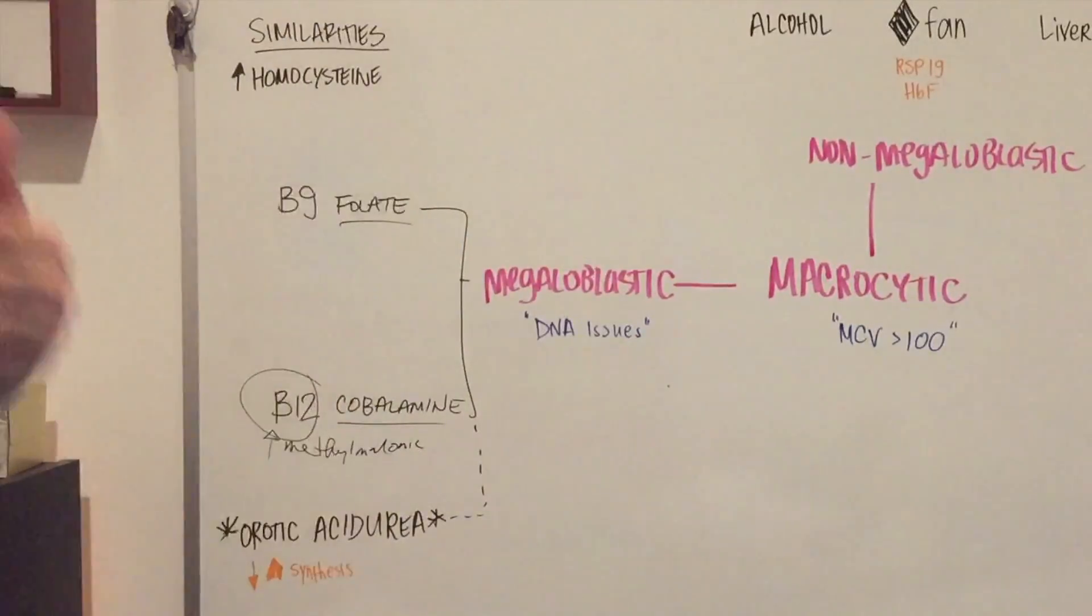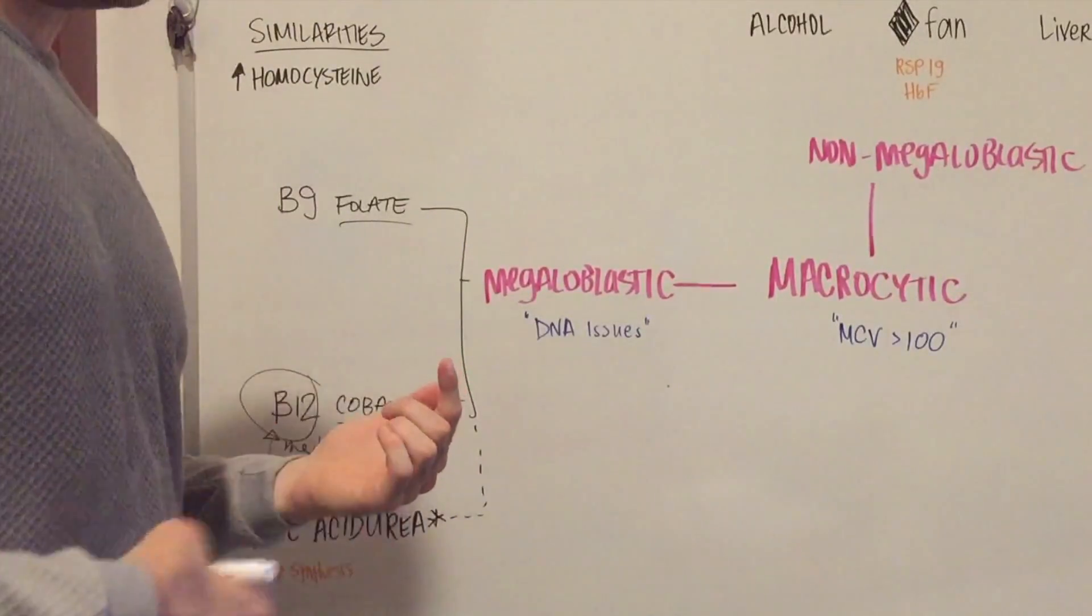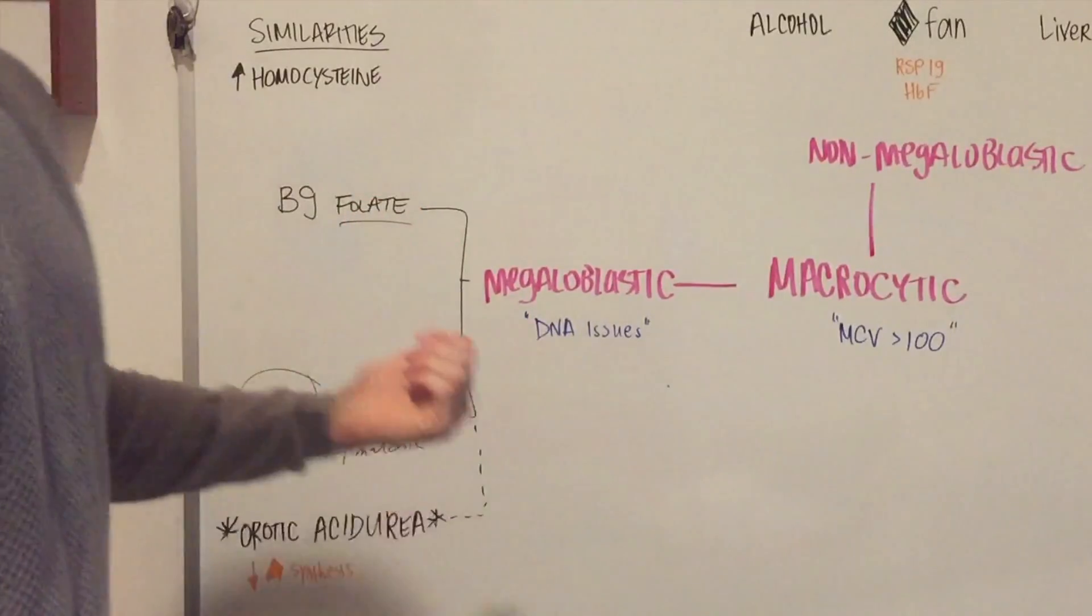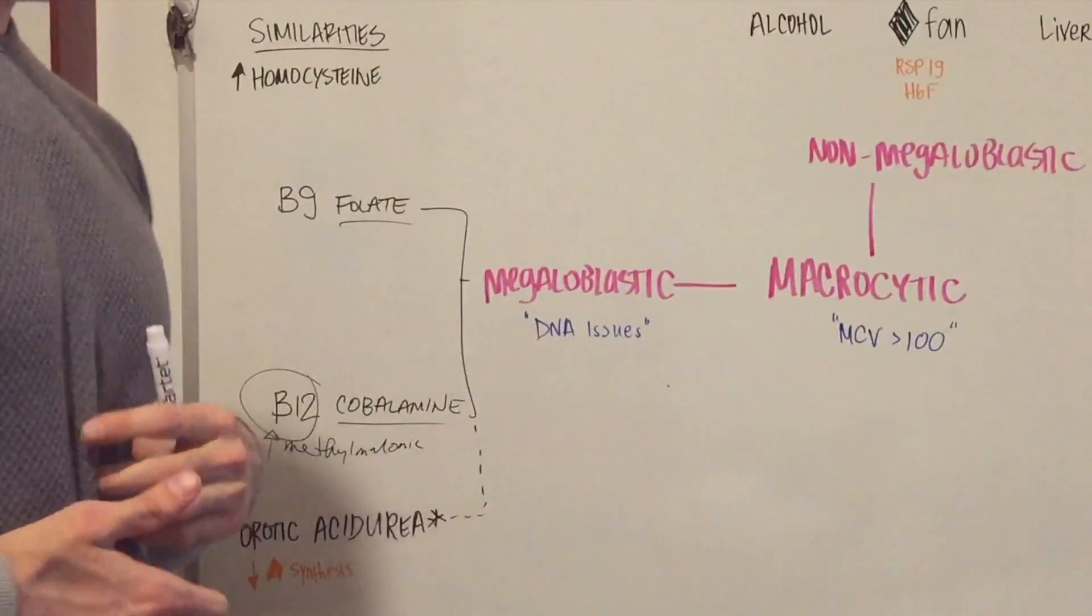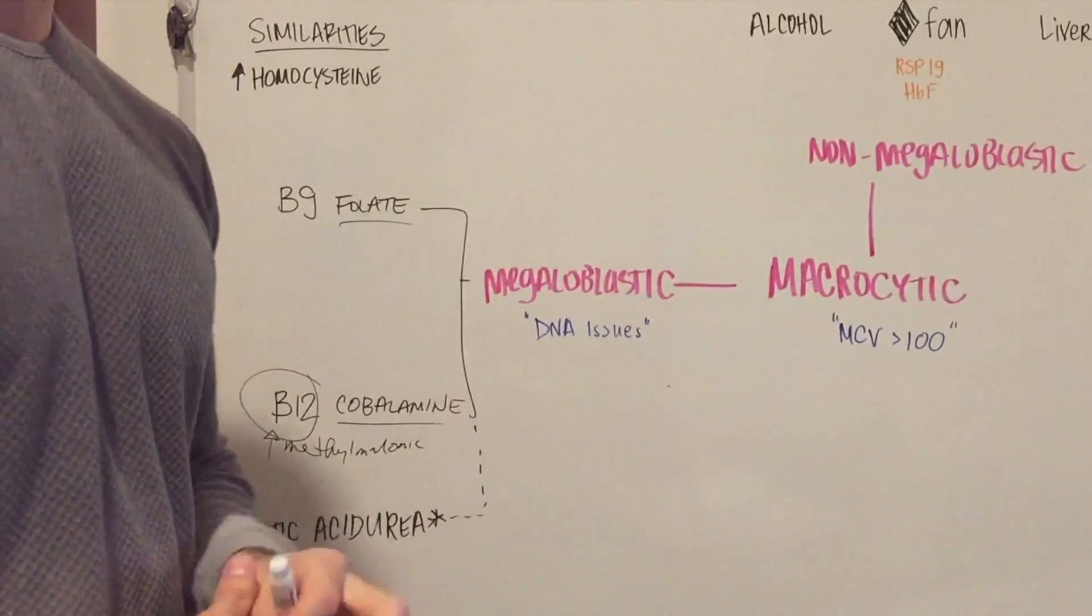And now your intrinsic factor is going to go from your stomach, and it's going to go down into your duodenum, jejunum, ileum. Terminal ileum is where it gets absorbed. And in that time, you're going to have the ampulla of Vater and...